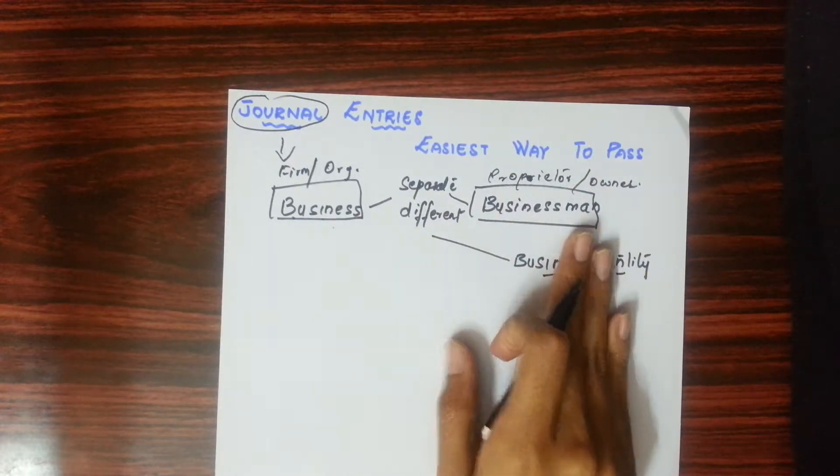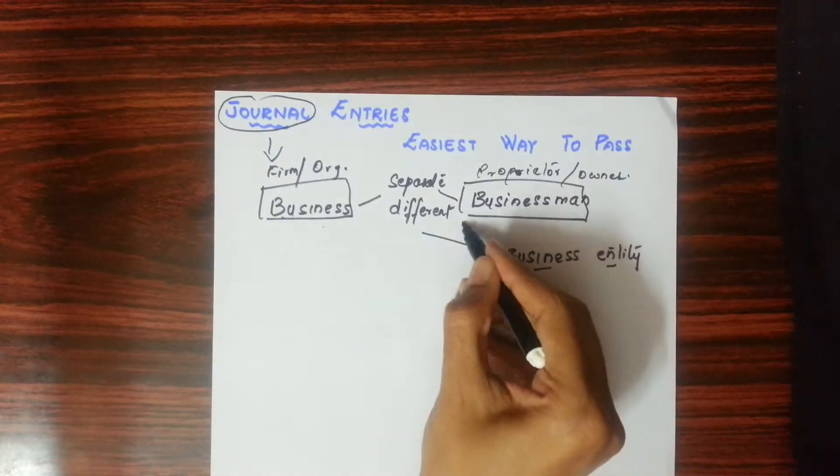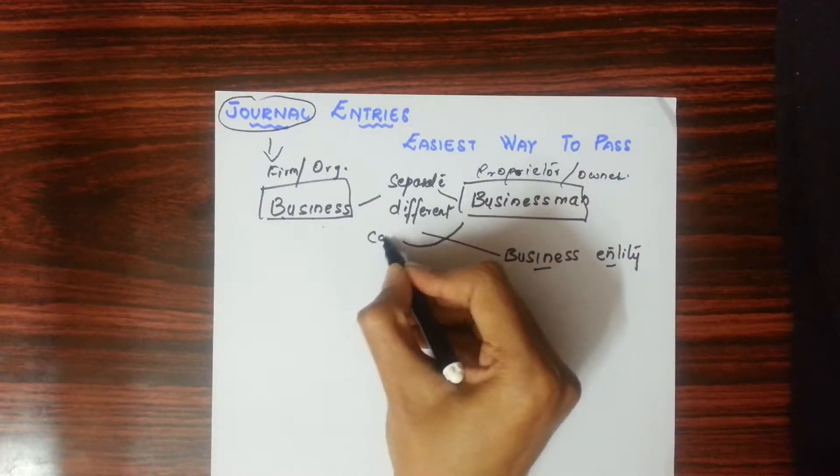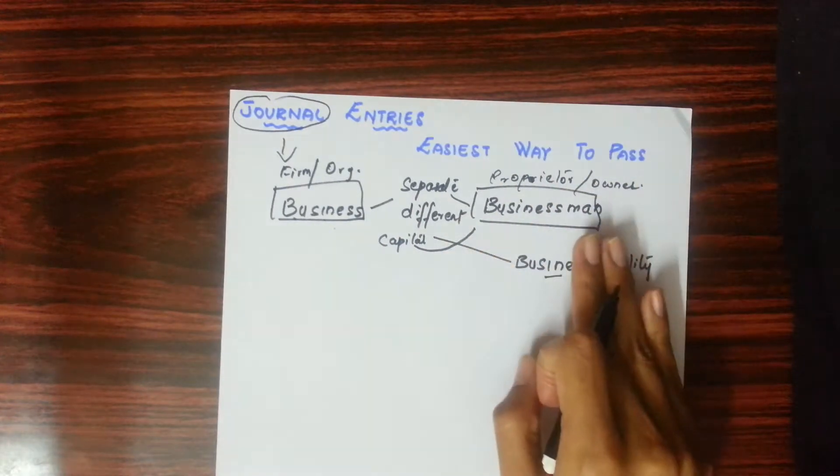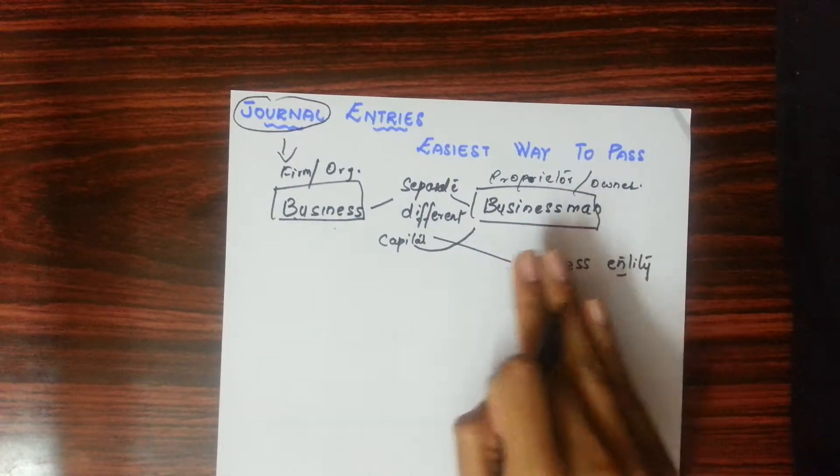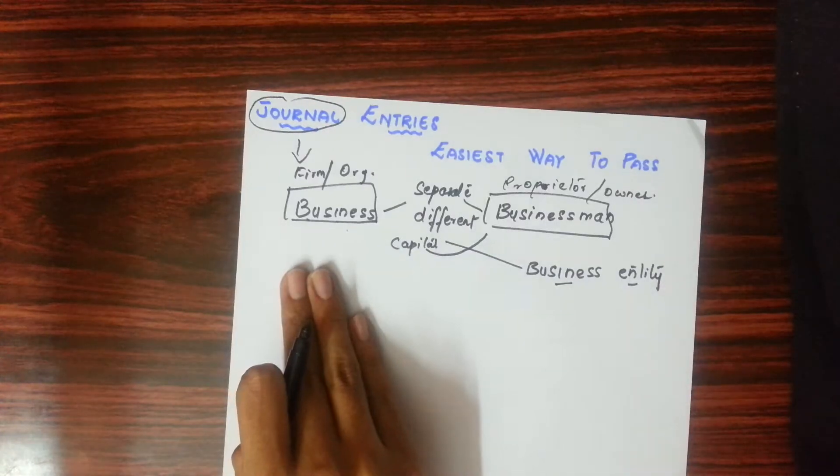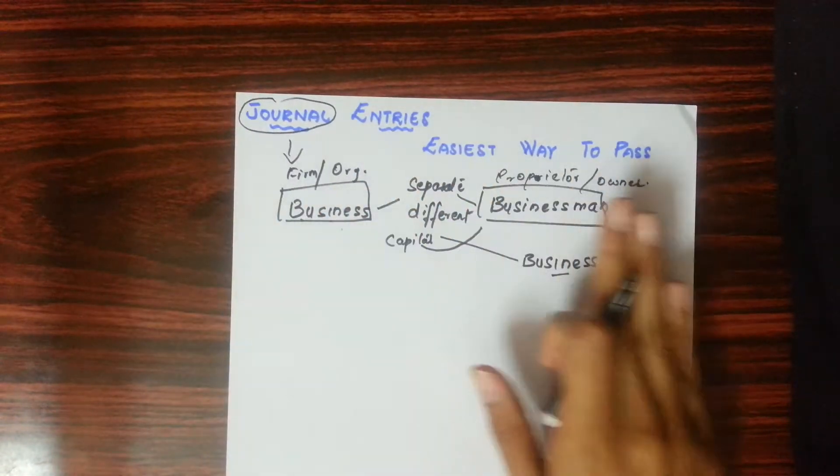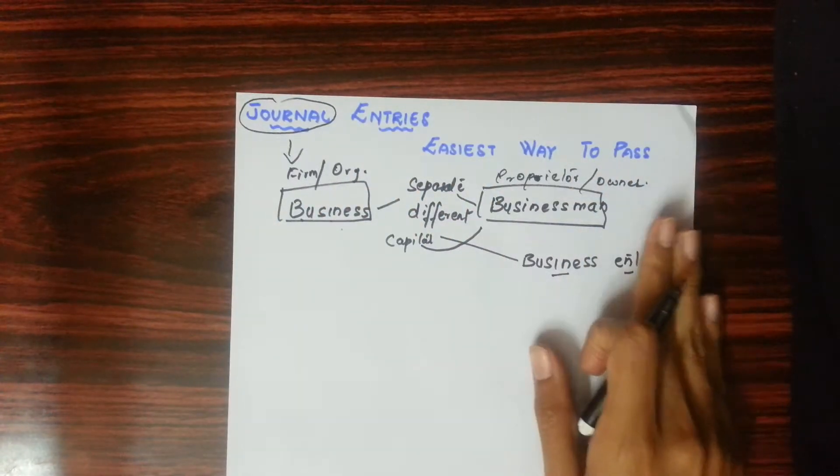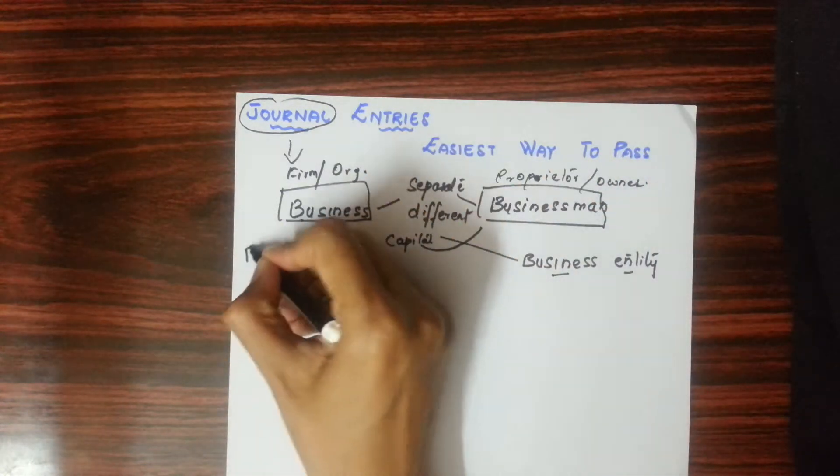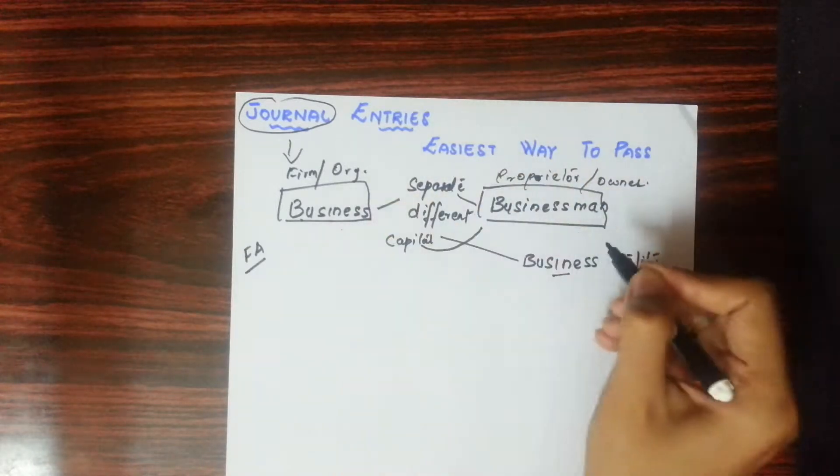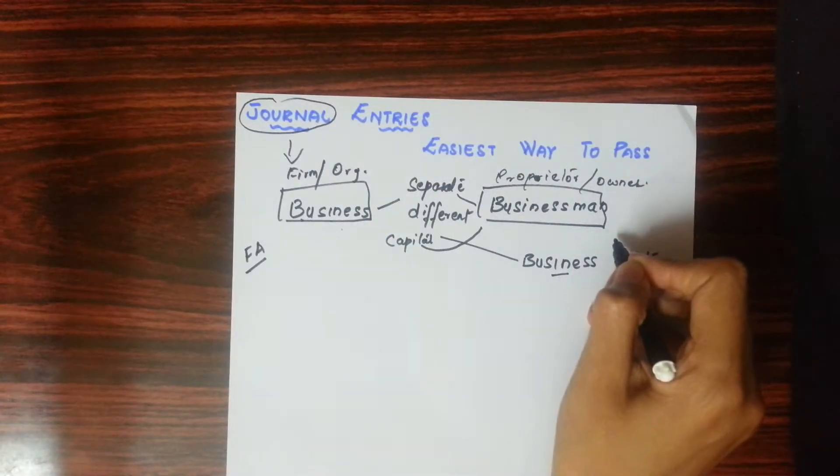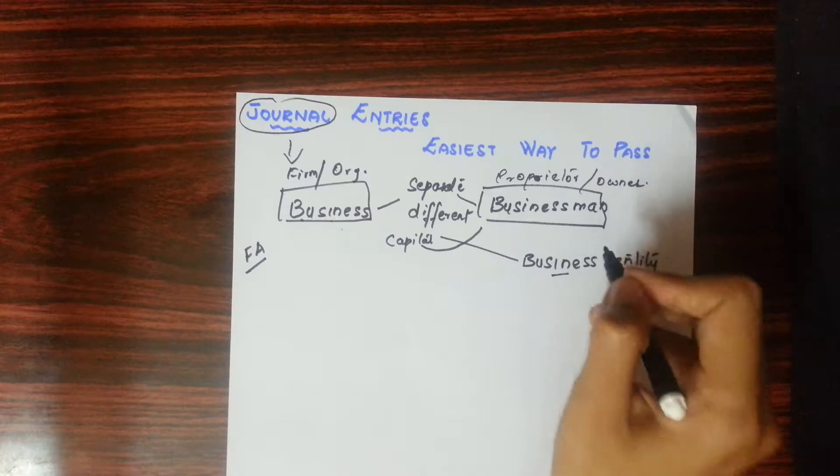These two are separate - the owner is the one who gives capital to our business. The one who helps start our business, that is the business. Even if the business owner himself runs the business, he mentions the business separately and himself separately. So whatever financial transactions we do, whatever financial accounting we do, we will do it for the business, not for the business owner. Remember this well.